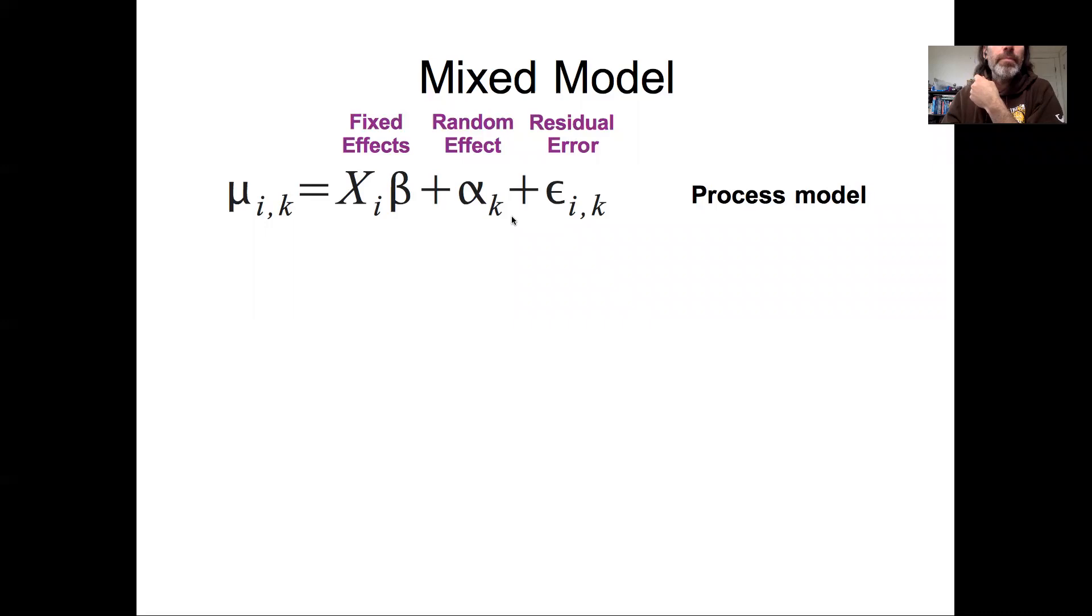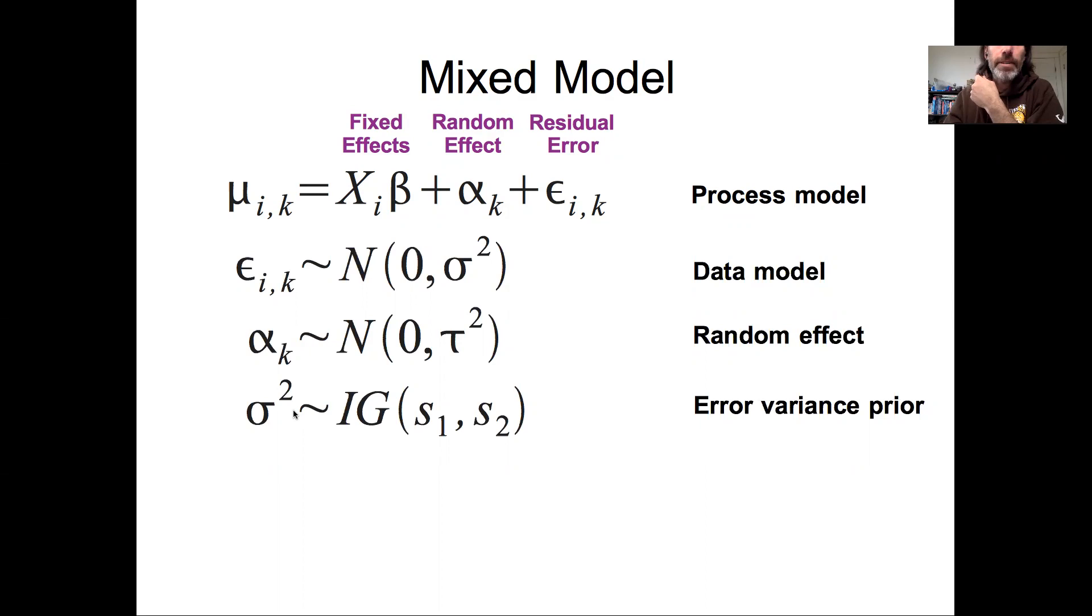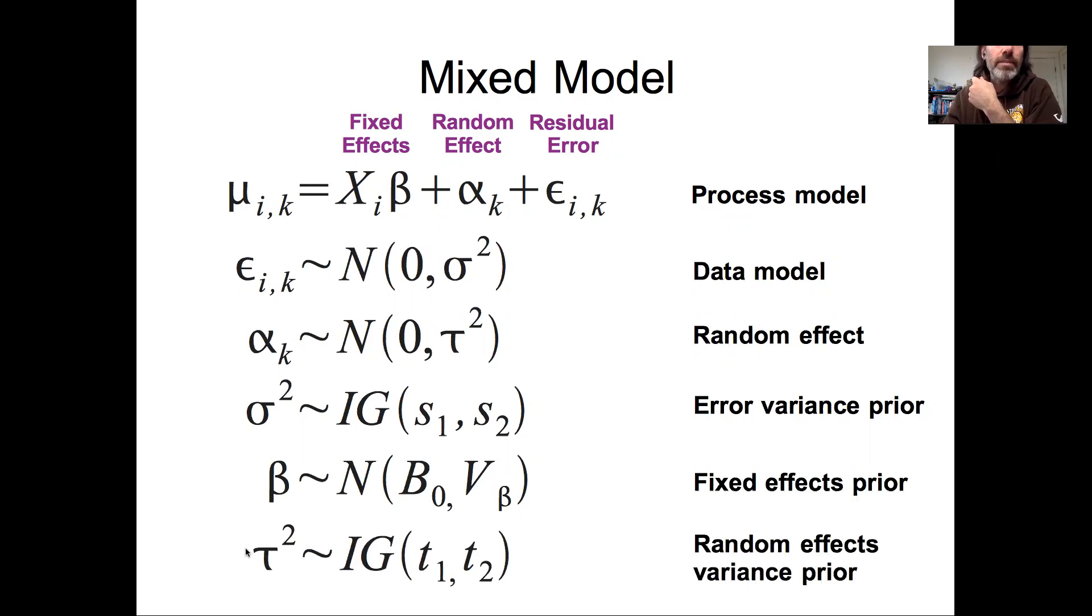In a mixed effects model like this, we would still have to have a data model describing this residual error, we need to have a parameter model describing our random effects, and then we'd have to have priors on our residual variance, priors on our fixed effects slopes and intercepts, and priors on our random effects variances.